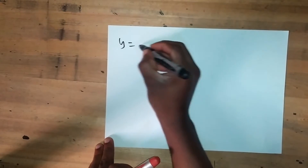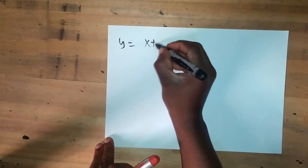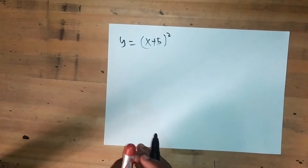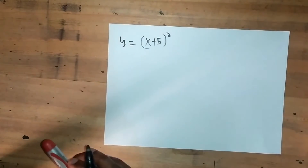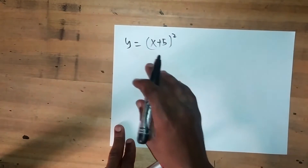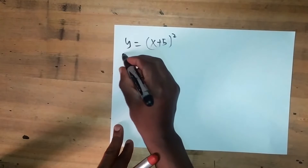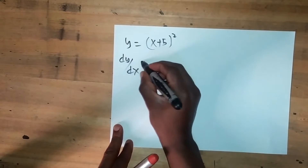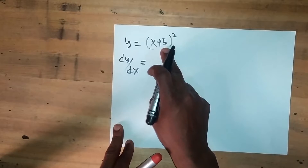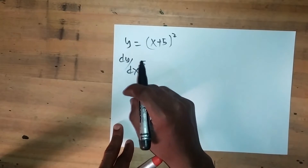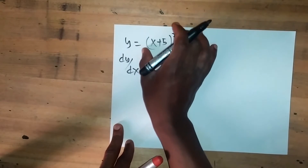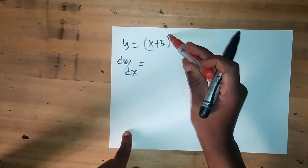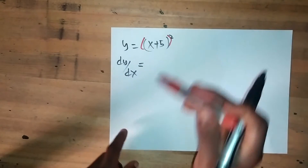Given y equals (x + 5) squared, we are told to find the gradient with respect to x. To find the derivative of y with respect to x, this is a composite function. There's an outer function that is squared and an inner one, which is x plus 5.